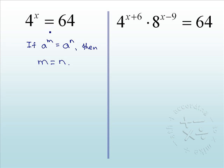So this first one is quite basic. Notice that 64 is the same thing as 4 to the third. So because we have a to the m equals a to the n, that means we can set our exponents equal to each other: x equals 3. Done and done.